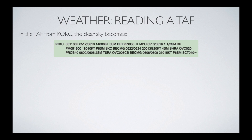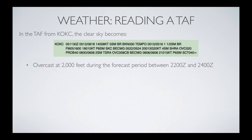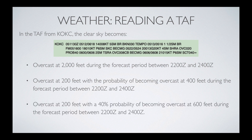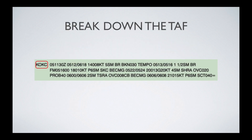This specific question is from the KOKC airport identifier. The question is: in the TAF from KOKC, the clear sky becomes — A) overcast at 2,000 feet during the forecast period between 2200 Zulu and 2400 Zulu; B) overcast at 200 feet with the probability of becoming overcast at 400 feet during 2200 to 2400 Zulu; or C) overcast at 200 feet with a 40% probability of becoming overcast at 600 feet during 2200 to 2400 Zulu.